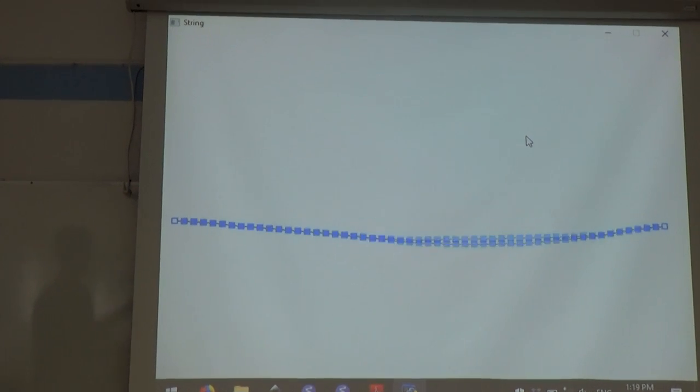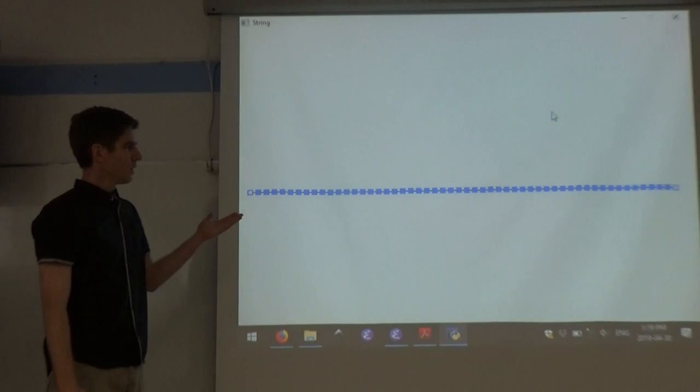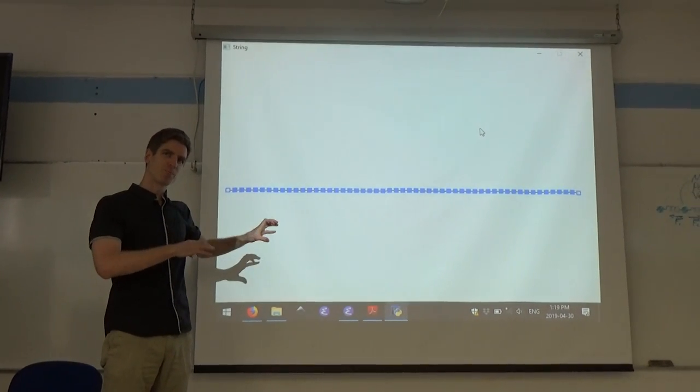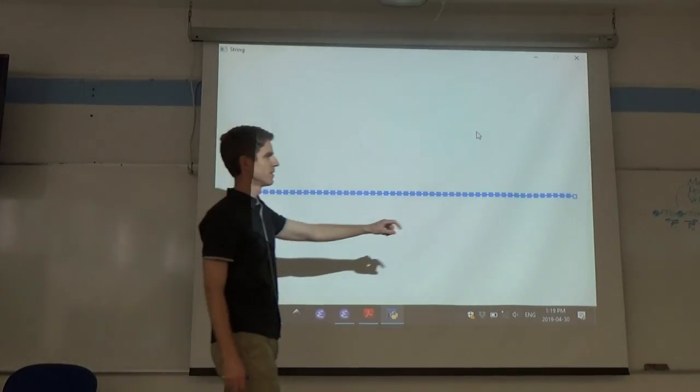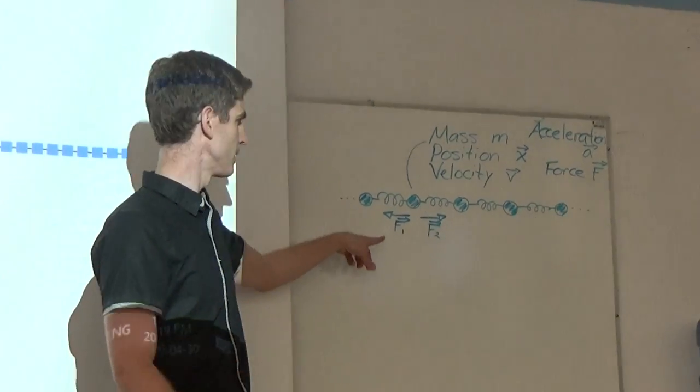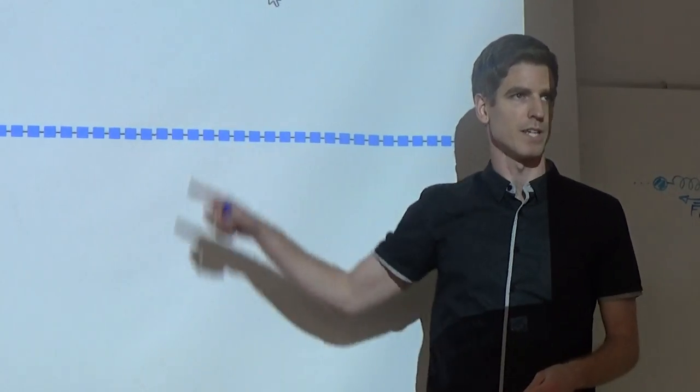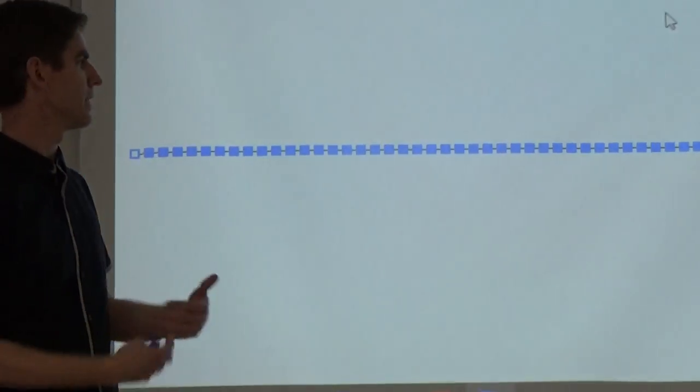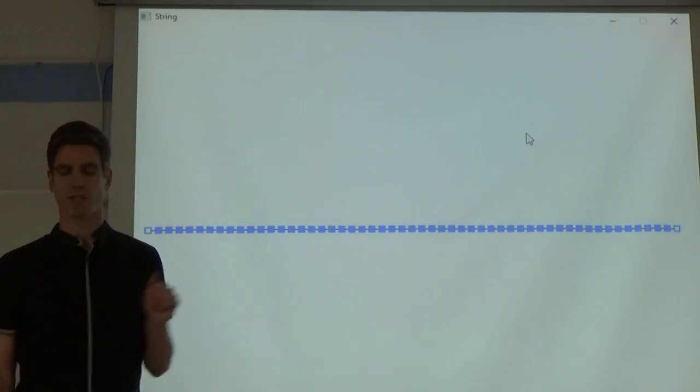But you get this oscillation type behavior from this. Now notice that when I made this program, I didn't tell it to oscillate. I only told it Hooke's Law and the damping and this kind of stuff. So the fact that this string bounces up and down and oscillates, that just comes naturally. It just emerges from the system itself, from the simulation.